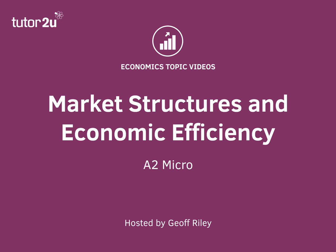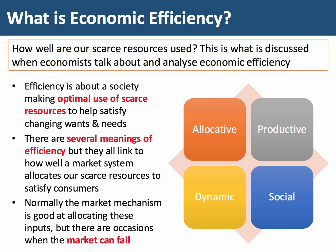In this A2 micro presentation we're going to take a quick look at some market structures and think about whether they lead to an economically efficient outcome. The best definition of economic efficiency is when a market process leads to an optimum allocation of scarce resources to help satisfy changing needs and wants. At A2 micro it's really important to understand allocative efficiency, productive efficiency, and dynamic efficiency. Social efficiency is also important in markets where there are significant external costs and benefits.